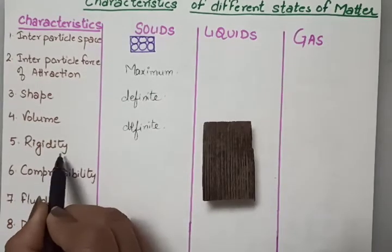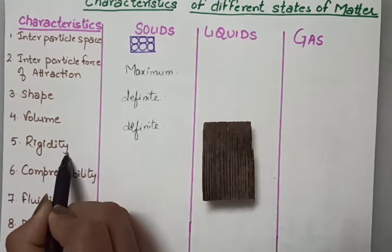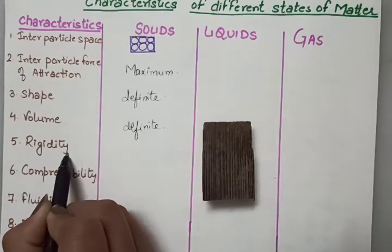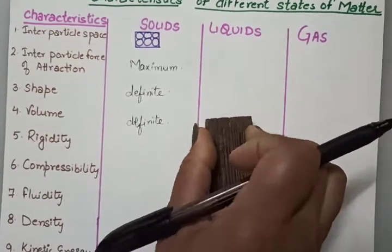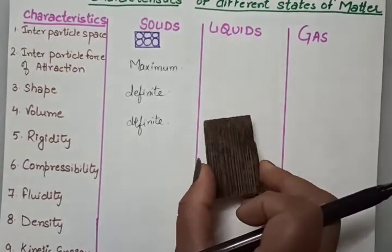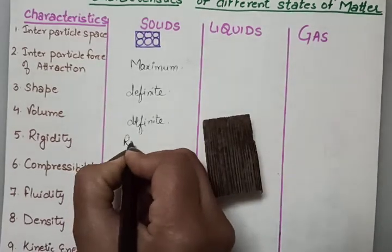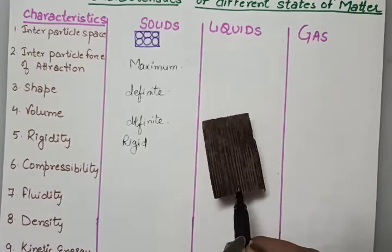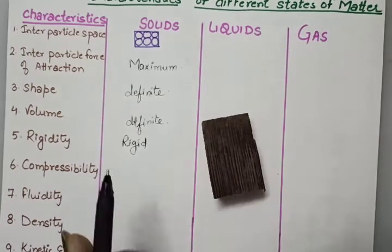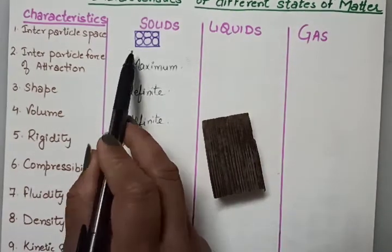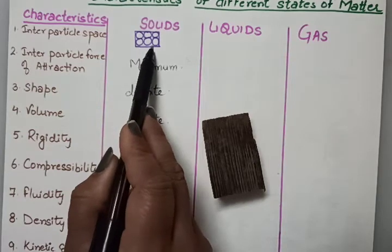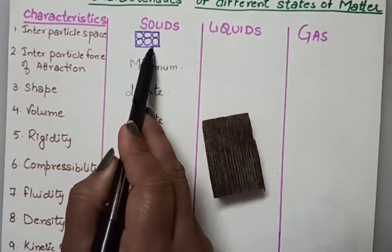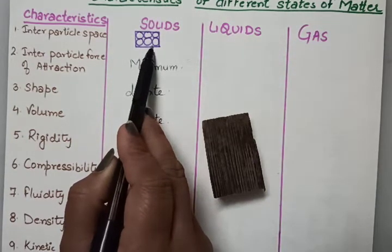The next point is rigidity. Rigidity means the ability to retain their shape. Are you able to change its shape? No — that means solids are rigid. They are rigid due to their definite boundaries, maximum forces of attraction, and less inter-particle space between the particles.